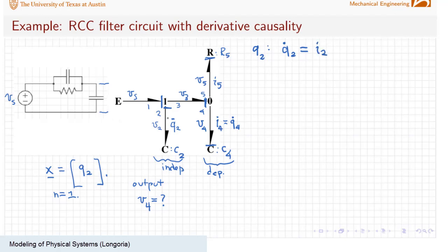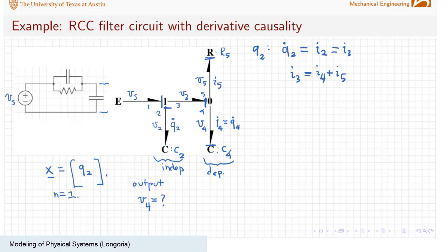I2 is the current through this capacitor. The current is being causally determined — look at this one junction — and I2, the current here, is determined by I3. So write it causally: I3. Now I need to find I3. I3 is the sum of I5 and I4. If you learn to write the equations by reading the causality, it saves you so many steps in the algebra. So now you're directed to find I4 and I5.